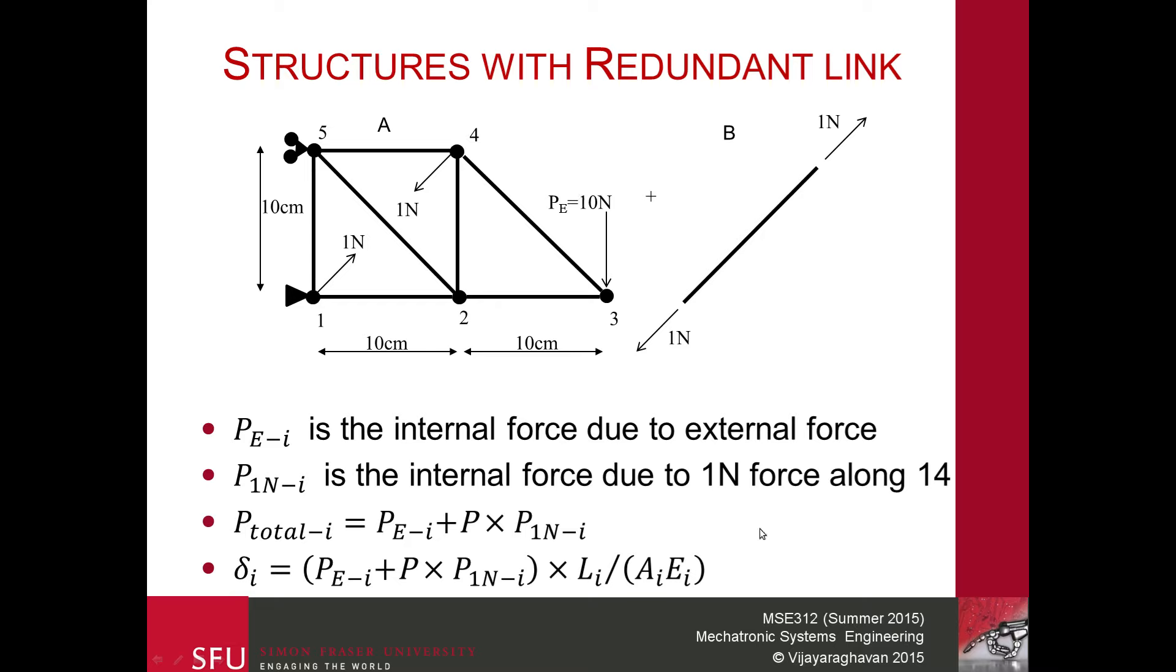So the total force if we need to apply P times 1 Newton between 1 and 4 is given by P_Ei plus P times P_1N. This is fairly straightforward because the truss is a linear structure. So if I double this force over here, all the internal forces will be doubled.